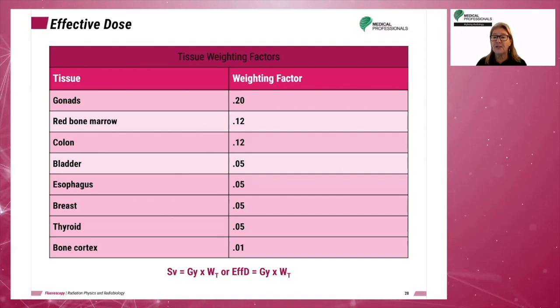Effective dose is expressed as EfD and the unit of sievert is used as the unit of measure. Like equivalent dose, we first must know gray. The calculation would be sievert equals gray times weight, or effective dose equals gray times weight.